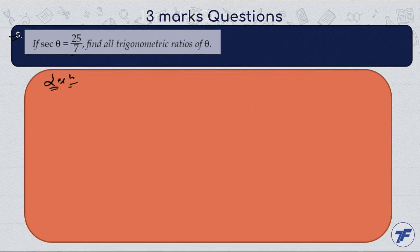We can solve this question by different methods. Taking the first method, a shortcut method. We have sec θ is equal to 25 by 7. We know that...